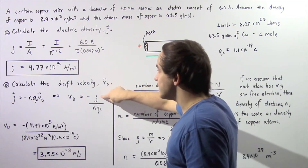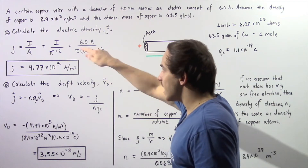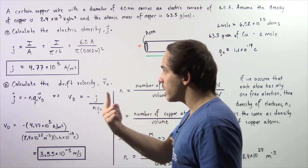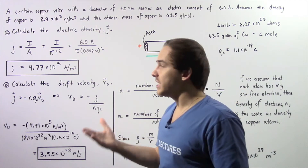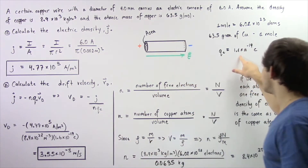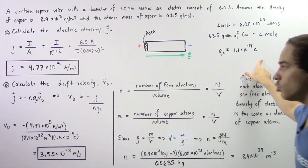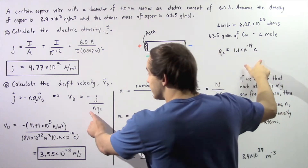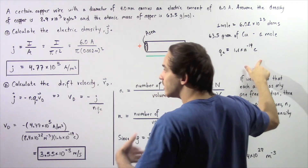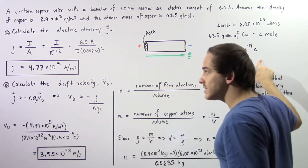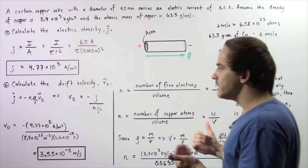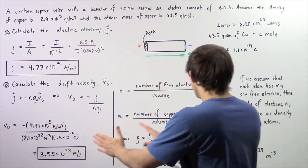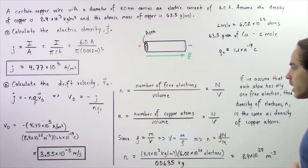We know what J is — that was calculated in part A. We know the charge on one electron, which is 1.6 times 10 to the negative 19 coulombs — that's a constant. So if we calculate the electron density n within our wire, we can calculate the drift velocity.